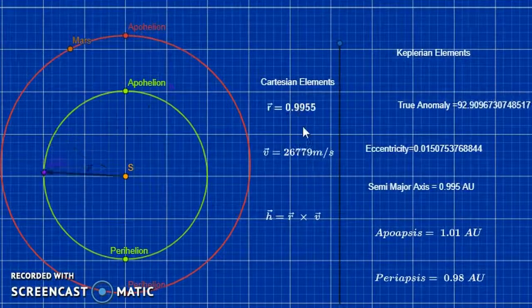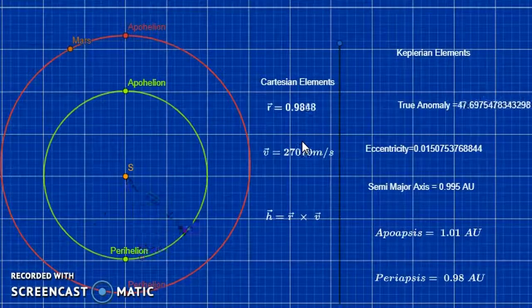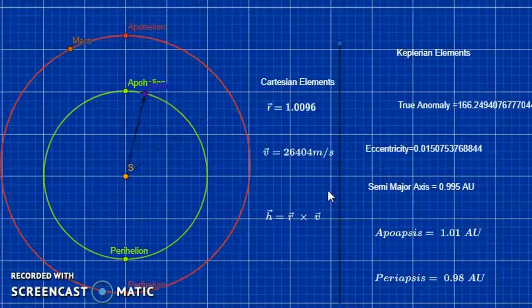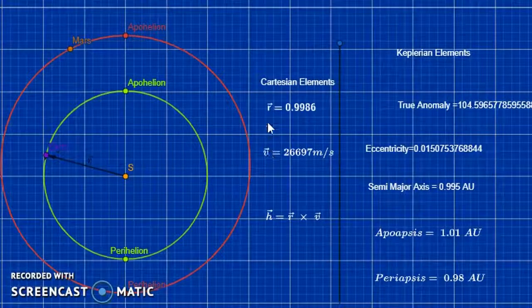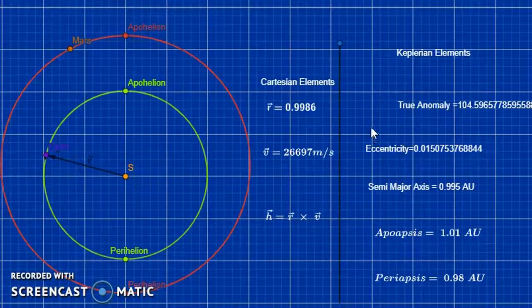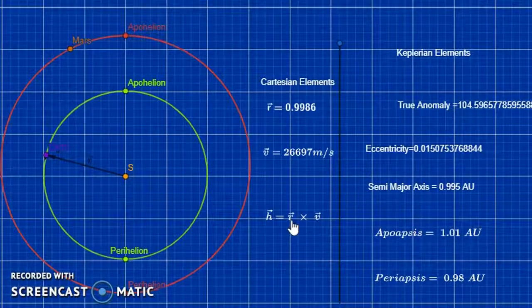The Cartesian elements can be added, subtracted, cross-product or dot product to obtain the Keplerian elements. If I increase my velocity in an instantaneous burn, the true anomaly would decrease, and all the other elements described here would increase.